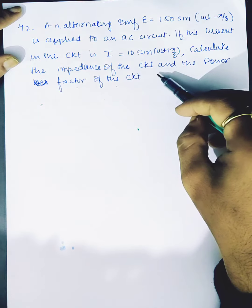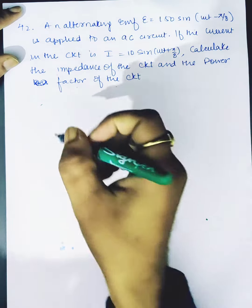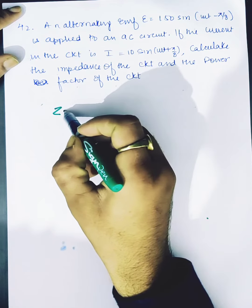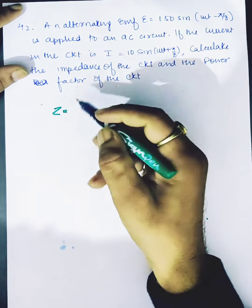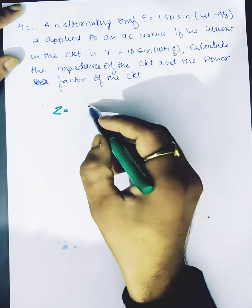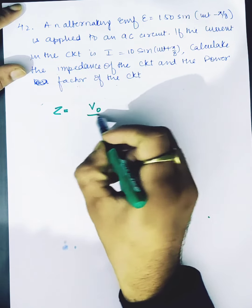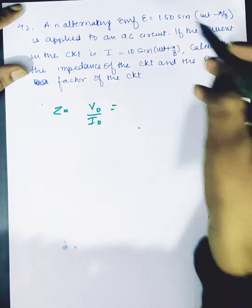Now impedance Z equals V₀ over I₀. You can write V₀ by I₀, and V₀ is given as 150, I₀ is 10. You can divide to get 15 ohms impedance.